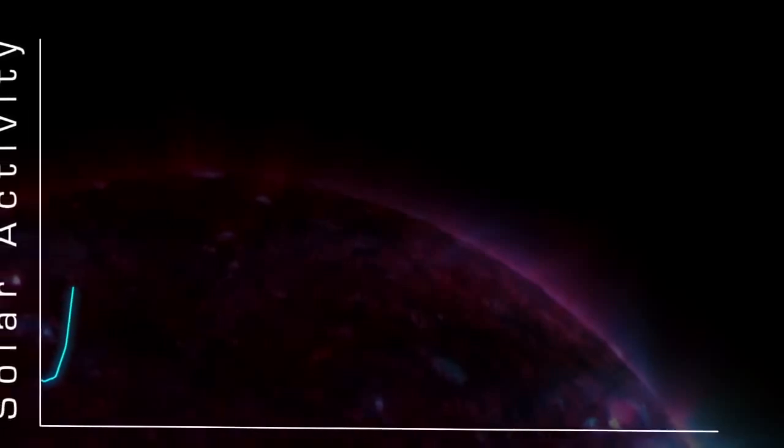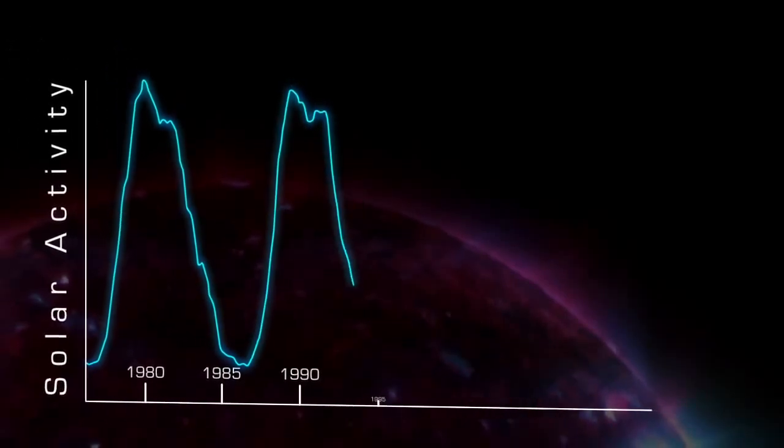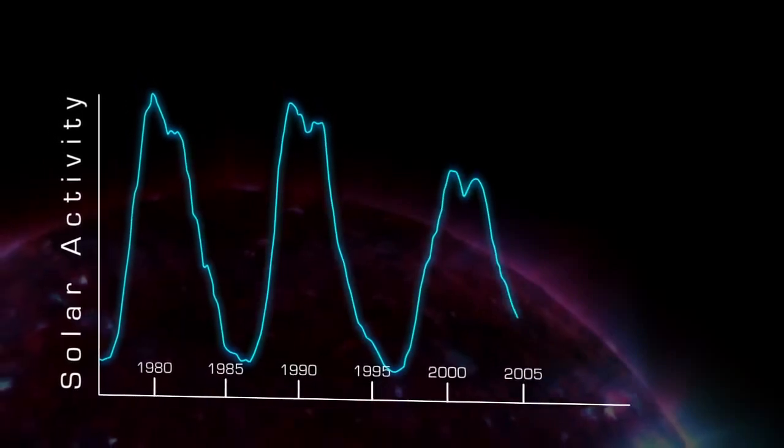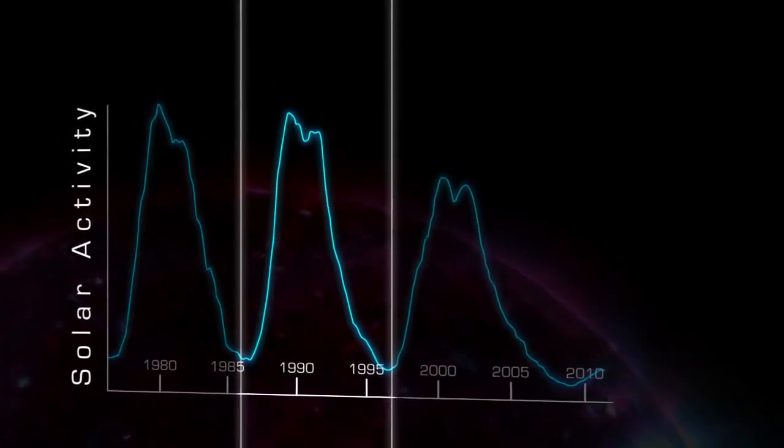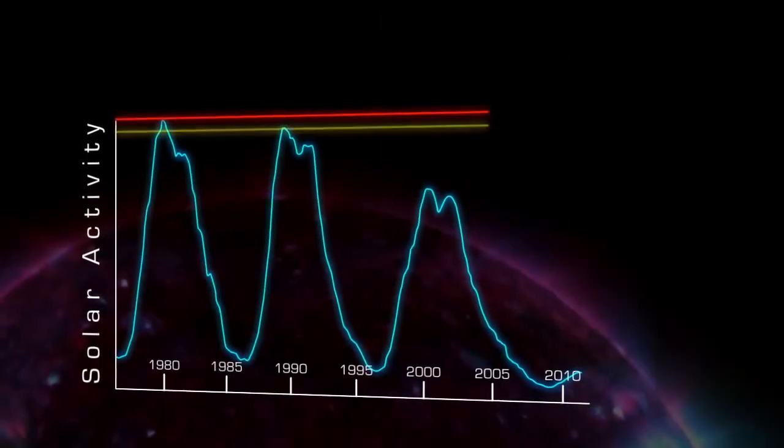In addition to these abrupt changes in activity, the Sun also has a long-term, more regular pattern of change. This pattern is called the sunspot cycle, and a single cycle lasts for about 11 years, although it can be as short as 8 or as long as 14, and it can vary dramatically in intensity.